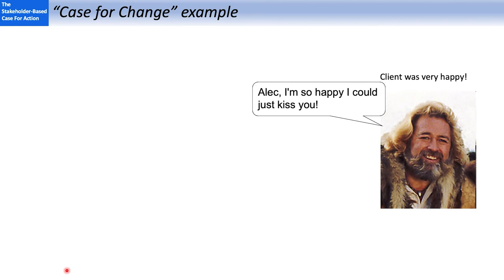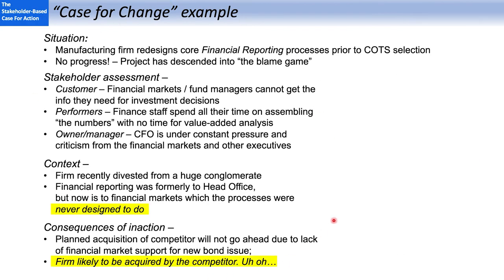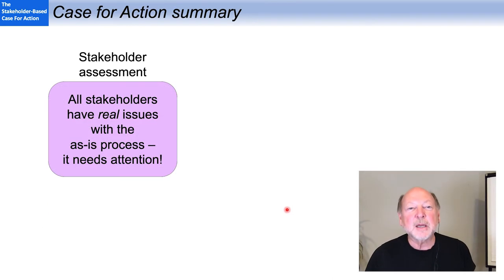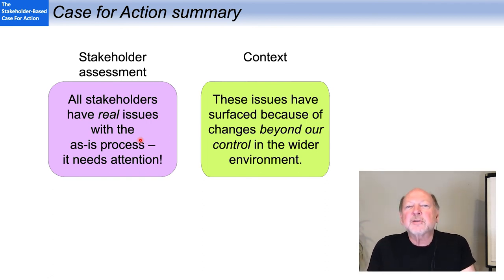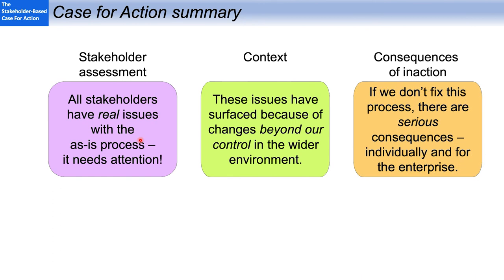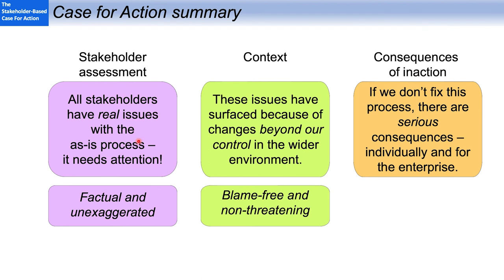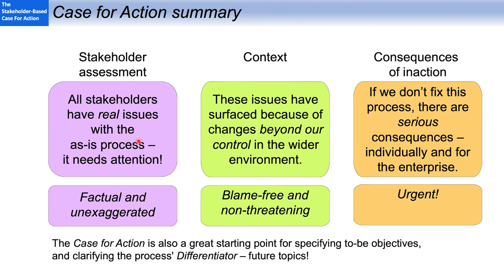The CFO was very happy because we got all this done in 90 minutes to two hours. So here's a summary: stakeholder assessment to demonstrate there are real issues; context to show that those issues are surfacing for reasons beyond our control in the wider environment; and consequences of inaction — if we don't fix the process, there are serious consequences individually and for the enterprise. This all works because it's fact-based, blame-free, and urgent. It's also a great starting point for specifying 'to-be' objectives and clarifying the differentiator of your process — what it needs to be great at.